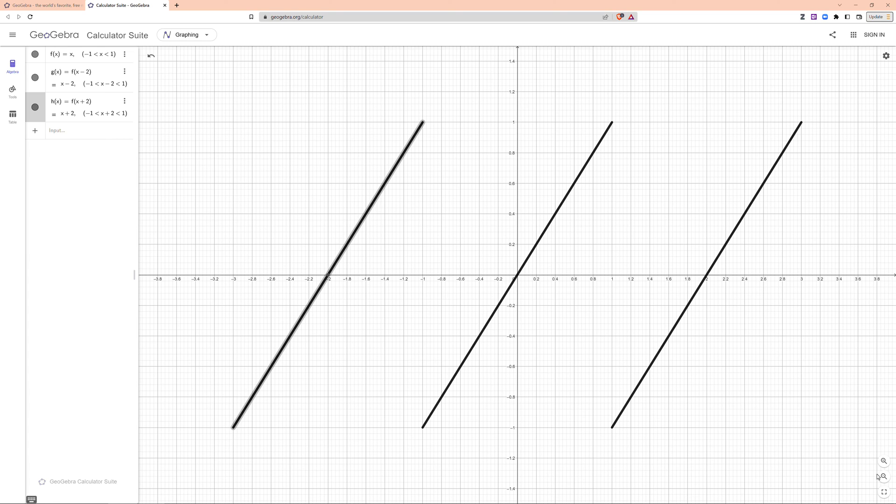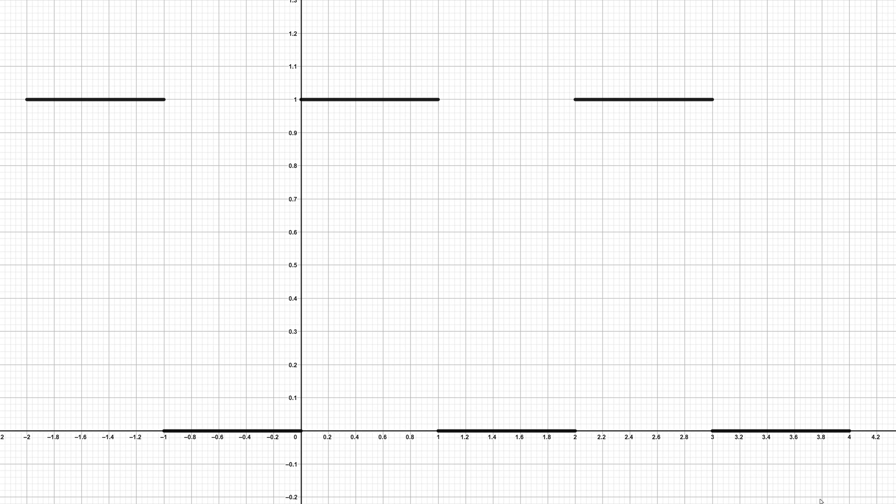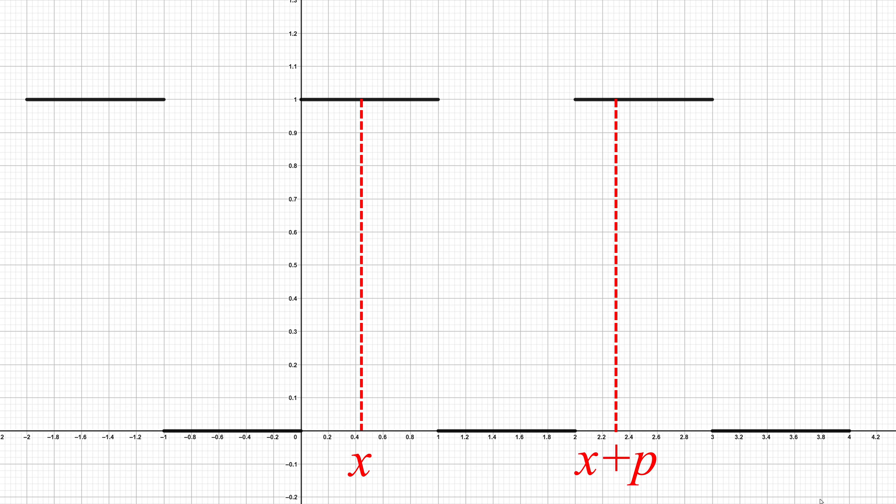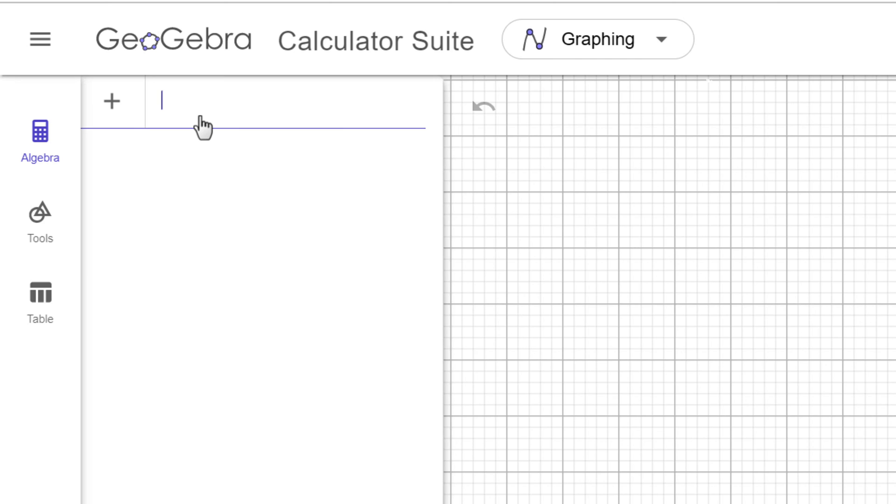Next example is a square wave function, which is defined as f(x) equal to 1 when x is between 0 and 1 and 0 when x is between 1 and 2. Then it repeats the function value at the period of 2. Since we have a function value 1 between 0 and 1, we will use if 0<x<1 followed by 1.